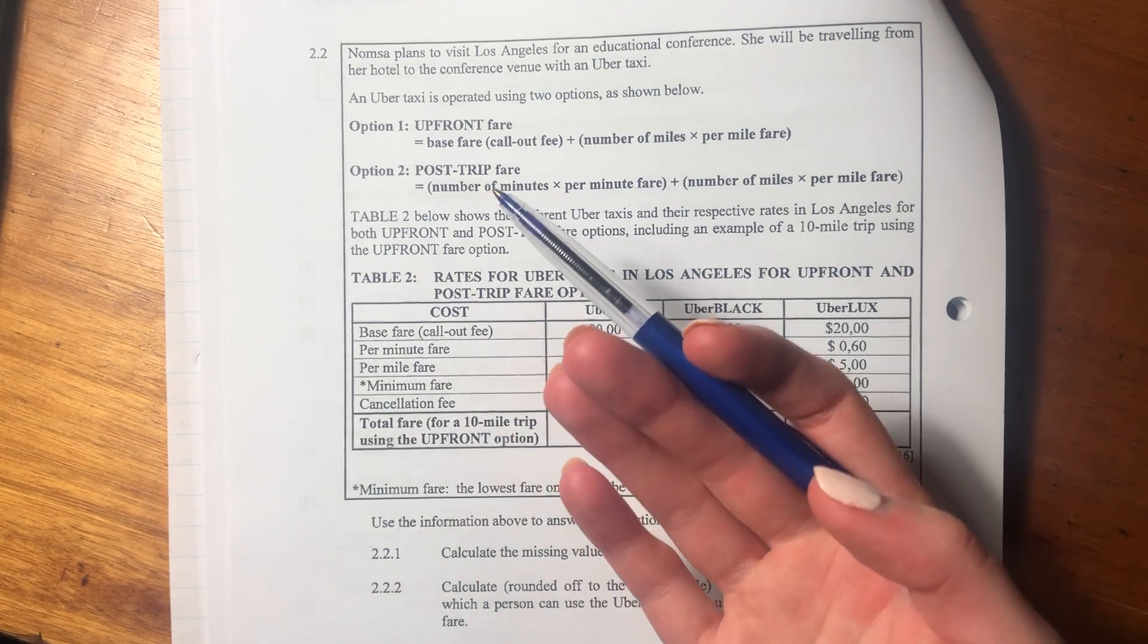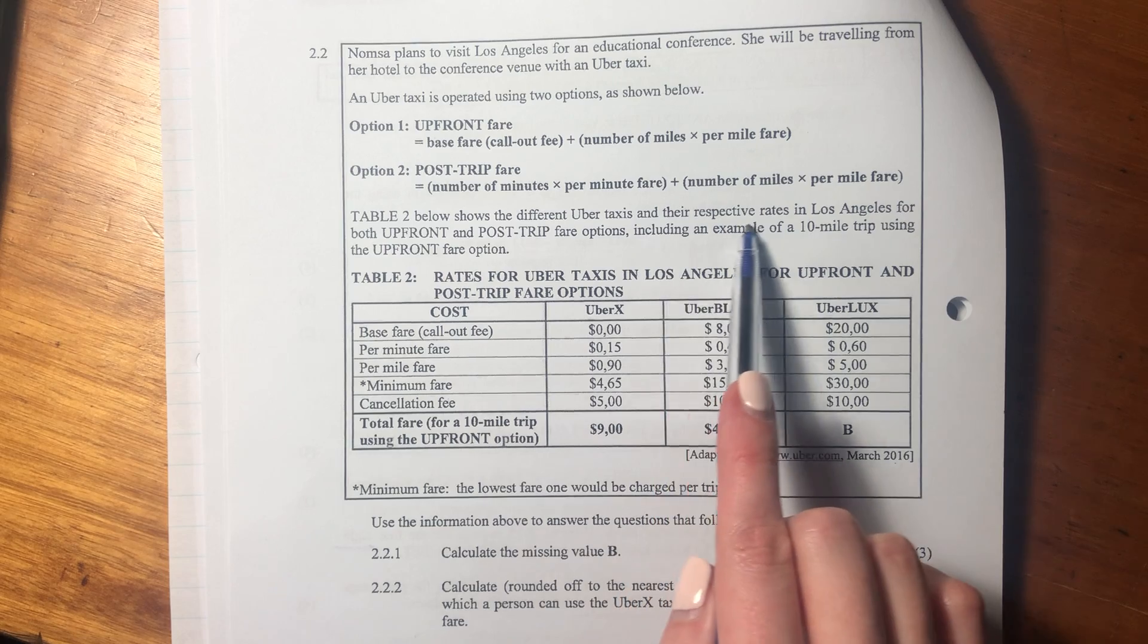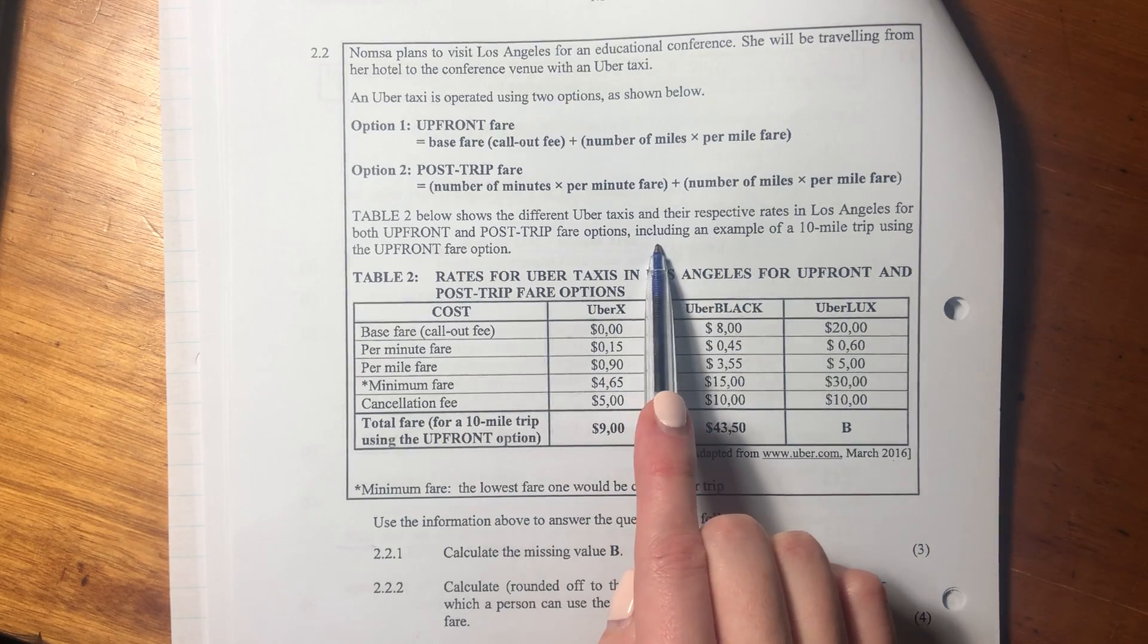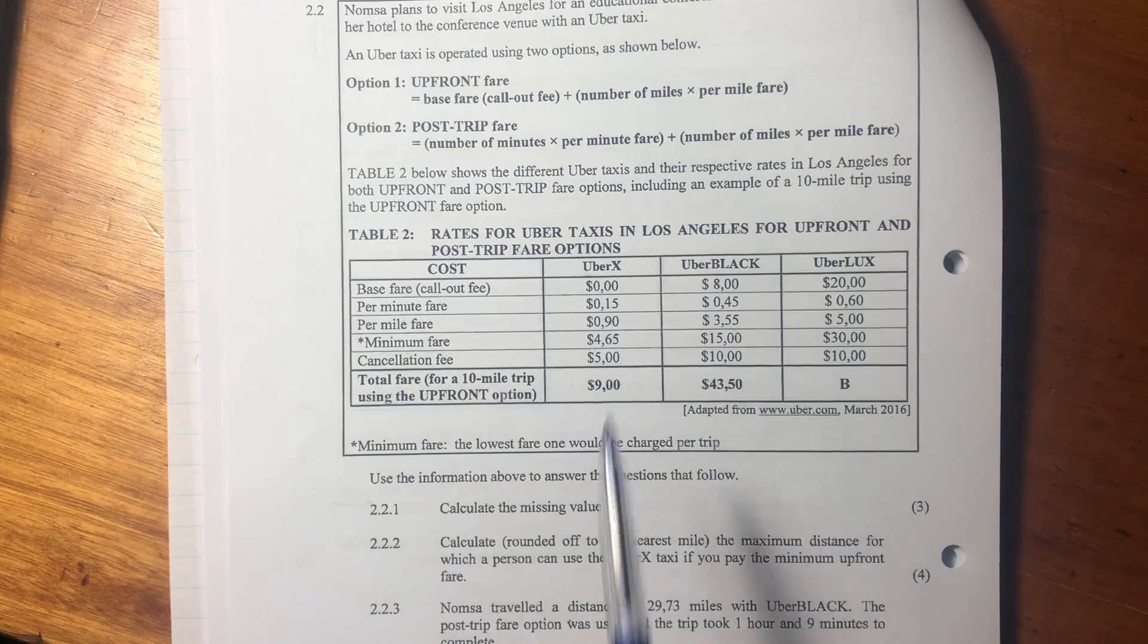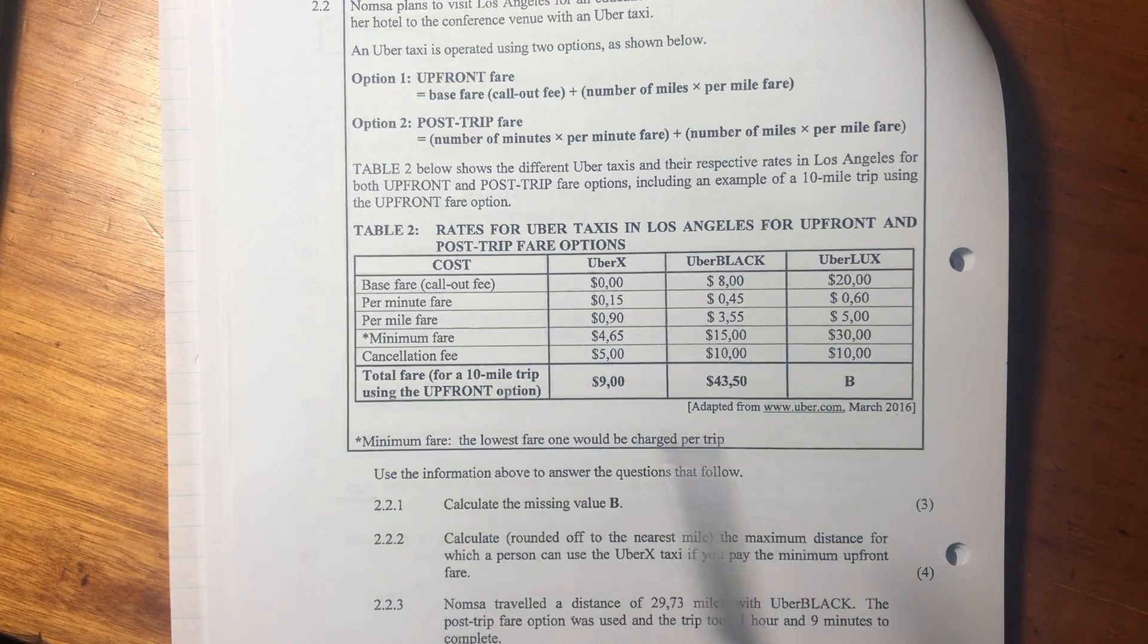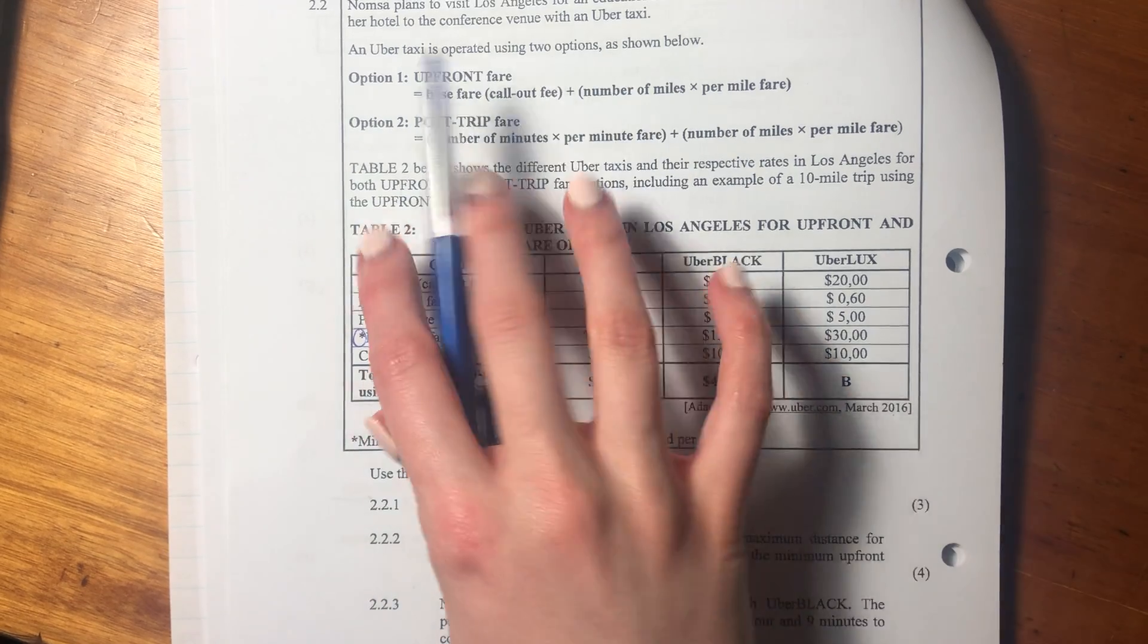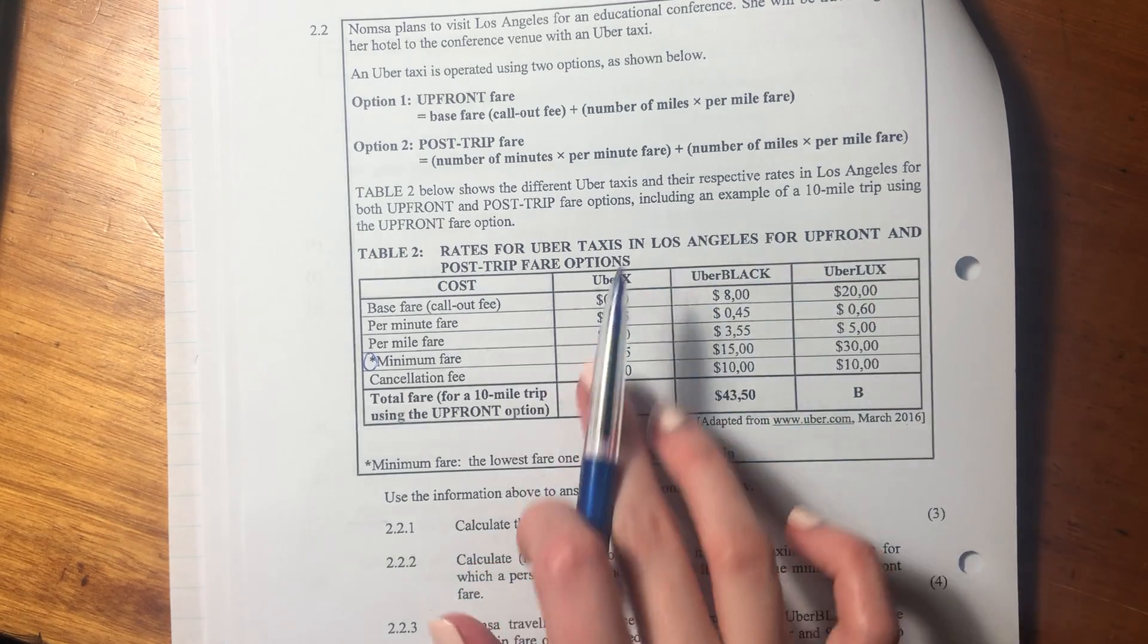So two different ways of calculating this cost. Table 2 below shows the different Uber taxis and their respective rates in Los Angeles for both upfront and post-trip fare options, including an example of a 10-mile trip using the upfront fare. So this is basically what you've done here. It says minimum fare is the lowest fare one could charge.